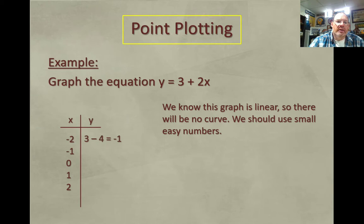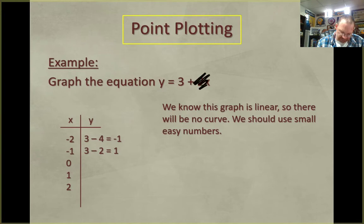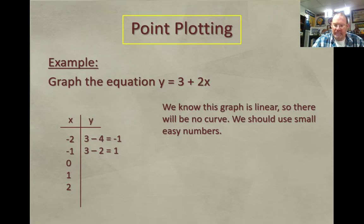All right, so negative 2 times 2 is negative 4. 3 minus 4 is negative 1. And then you plug negative 1 in. 3 minus 2 is 1. For 0, if x is 0, then in this equation, we can just ignore that whole term and we know that it's just 3. So we use those quick things to find those points. 3 plus 2 is 5. 3 plus 4 is 7.